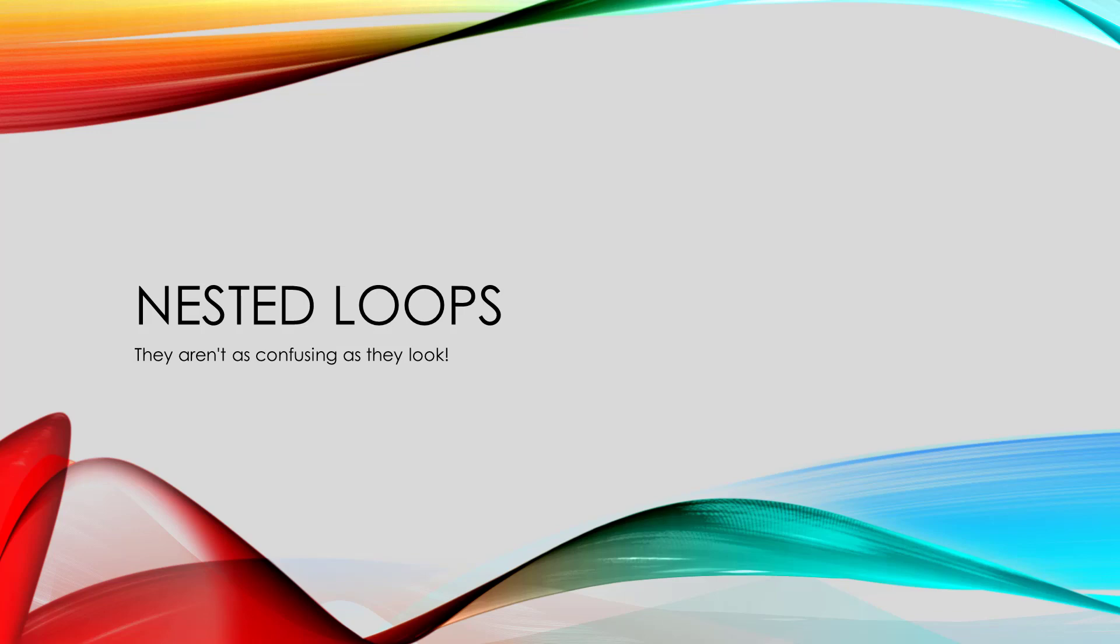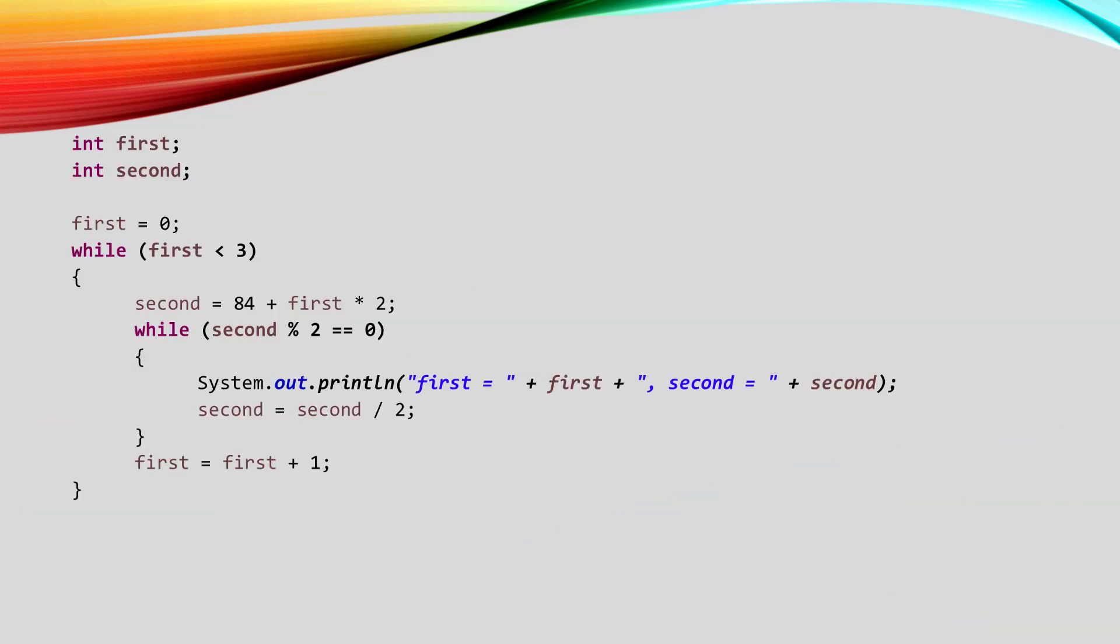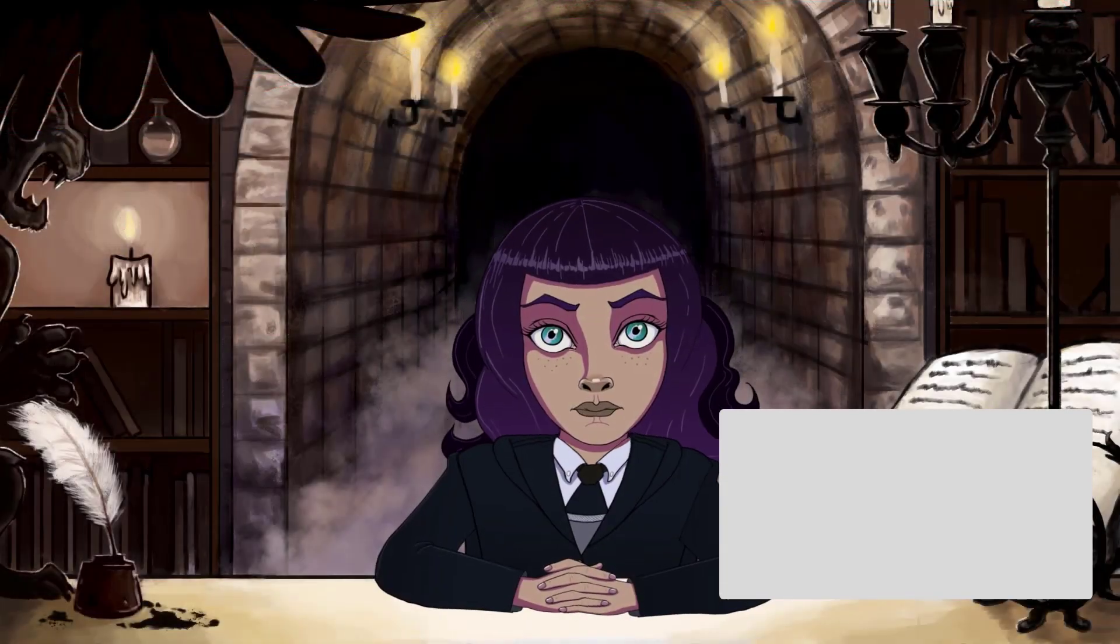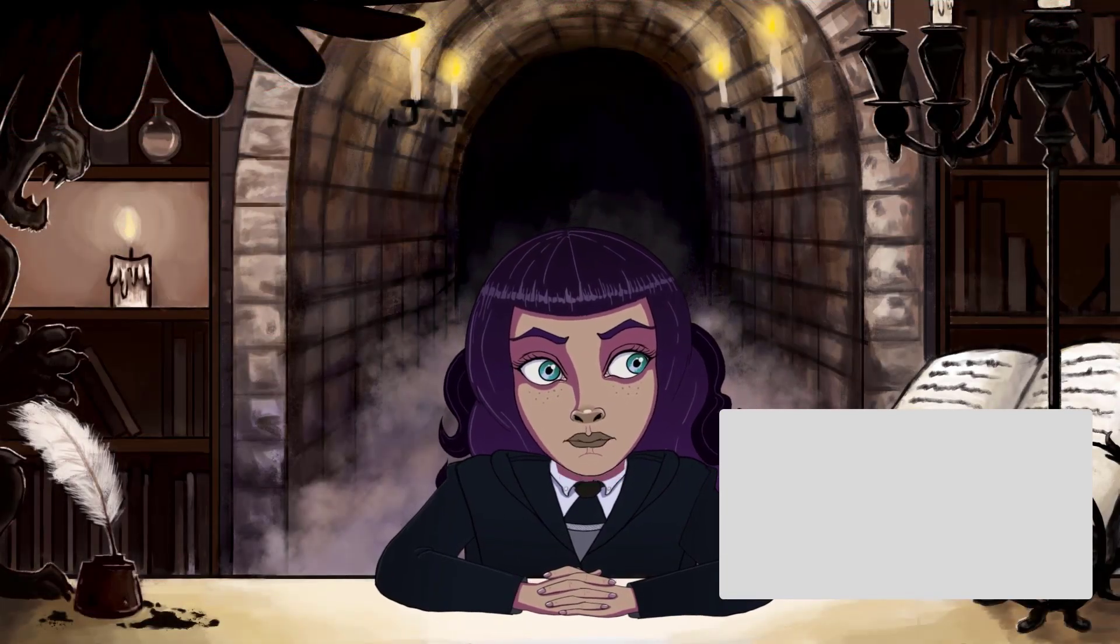We can put one loop inside another loop, and it doesn't turn out to be as confusing as it looks at the beginning. Okay, that looks pretty confusing. Zoomie, what should we do? Be the machine.